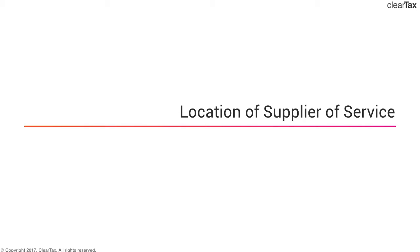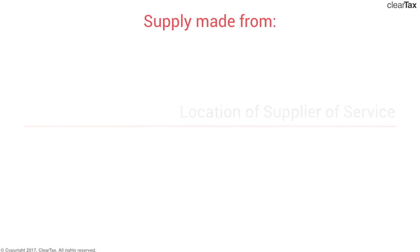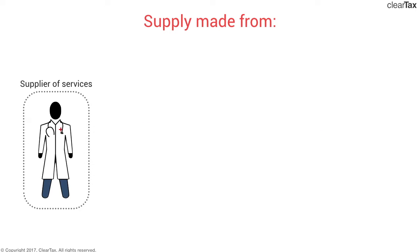So far in section 3 of module 4, we've checked out where the dealer has to obtain registration in case he has separate units in different states or separate units within the state, and in case he has separate business segments. It's now that we are trying to solve the confusion of where the location of a supplier of services would be. The law has laid down three specific locations in case of supplier of services.